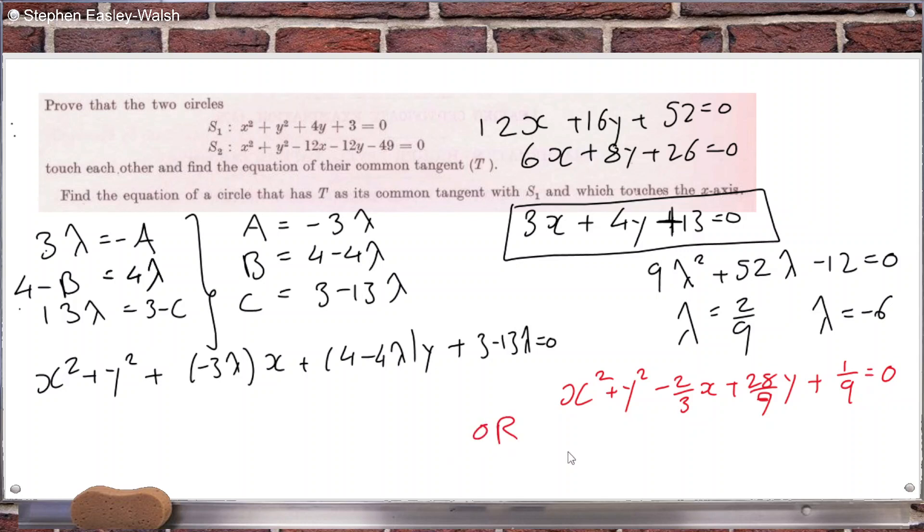Now, or, x squared plus y squared plus 18x. And then 4 plus 24. So it's 28y. And then 3 plus 13 times 6, 81. That's interesting. They look quite similar. It's kind of interesting.